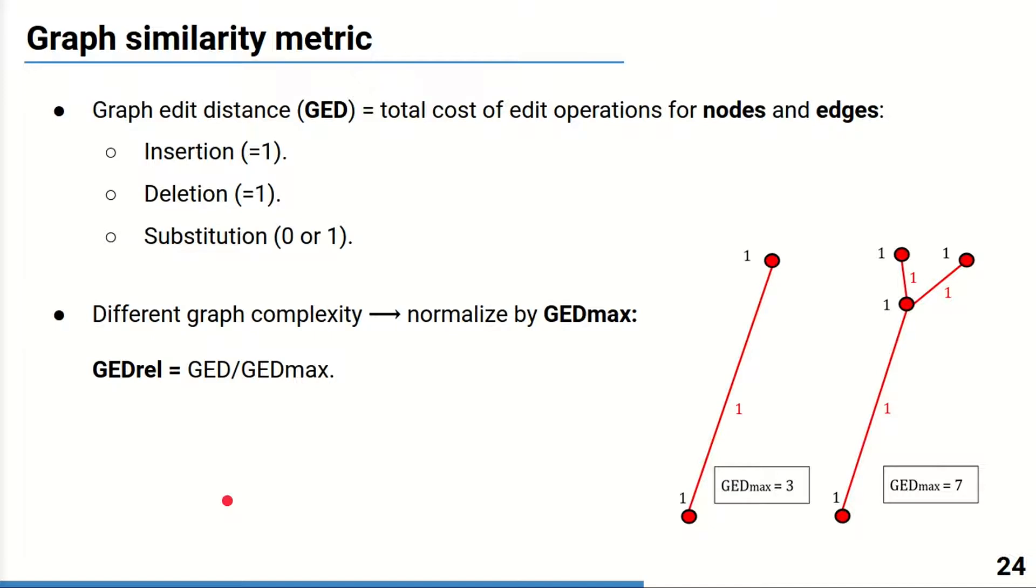To compare two graphs, we use a method based on graph edit distance, GED. GED is calculated as the sum of the costs of the modification operations required to align the two graphs. The operations include substitution, insertion and deletion of both nodes and edges.